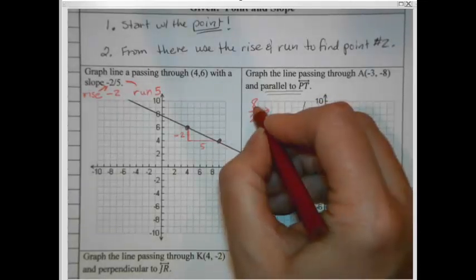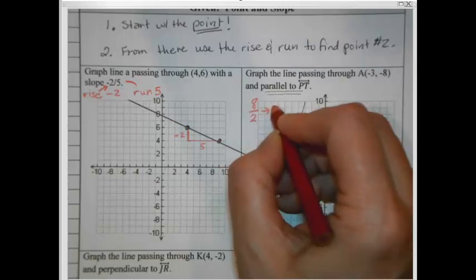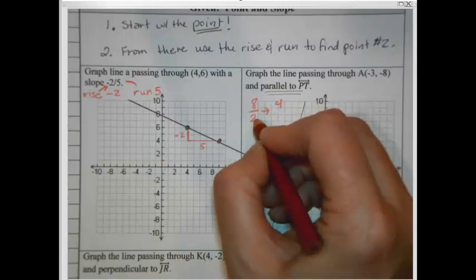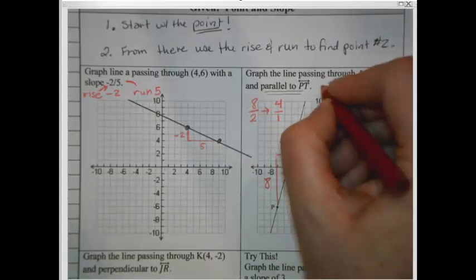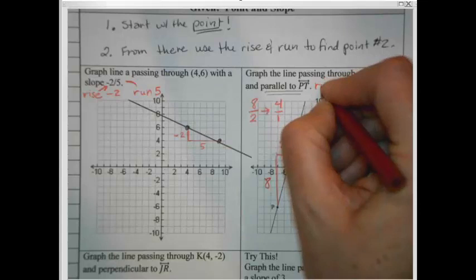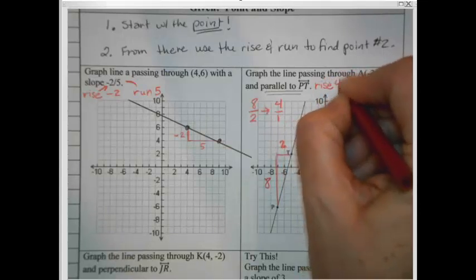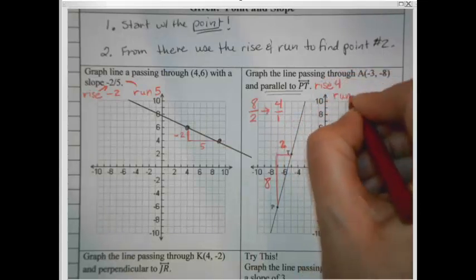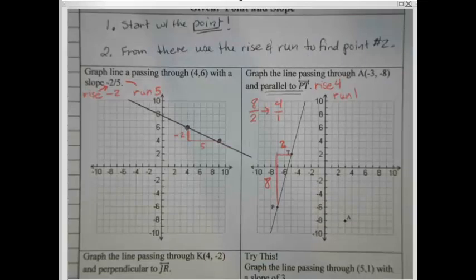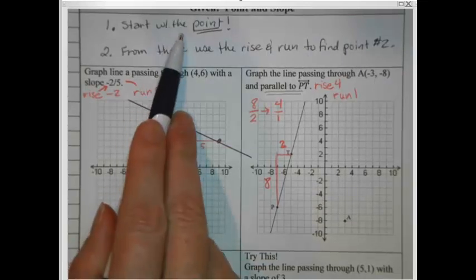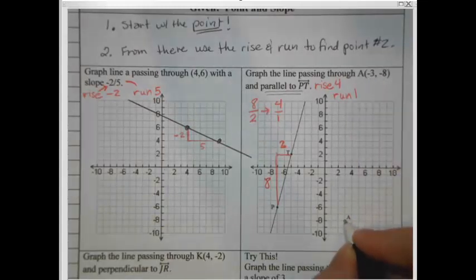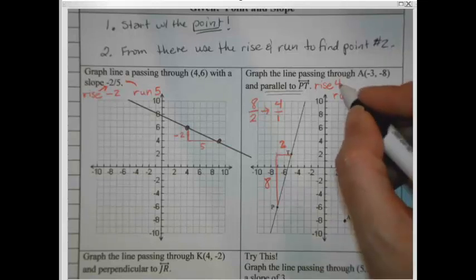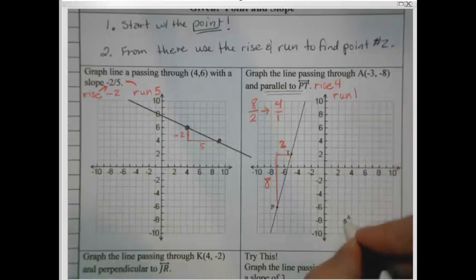That's what I'm going to do. I'm going to rise 4, and I'm going to run 1. Where do I begin, though? Remember, your first step is to start with the point. And our point was A at negative 3, 8. So I'm going to start here at point A, and then I'm going to use my slope, rising 4 and running 1, to plot this. So I'm going to go up 1, 2, 3, 4. And let me switch this. So I'm going to go up 1, 2, 3, 4. 4 on the rise and over just 1 unit on the run. And that brings me to this second point.